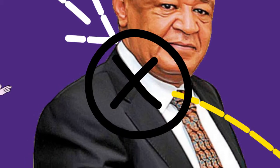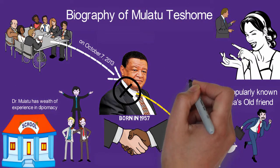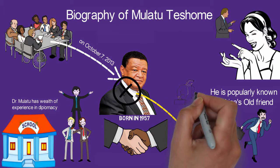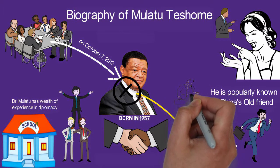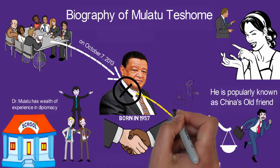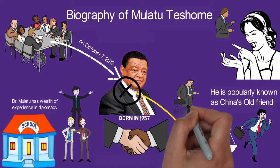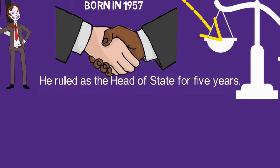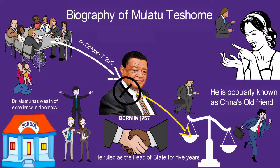Mulatu Teshome resigned on October 24, 2018, following a cabinet reshuffle by Abiy Ahmed, who became Prime Minister in April 2018. Mulatu released political prisoners and opened up the economy of Ethiopia for investors, ruling as the head of state for five years. He is married to Meza Abraham, and they have a son.